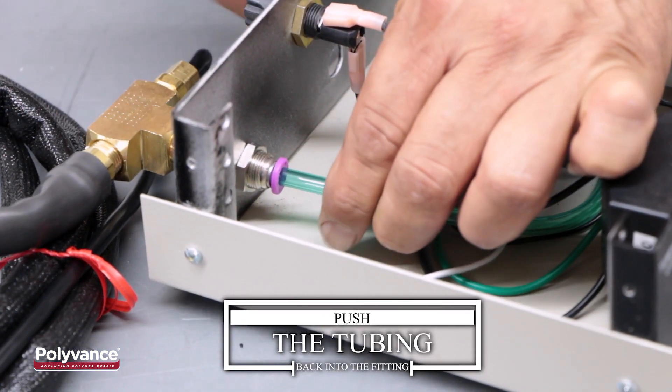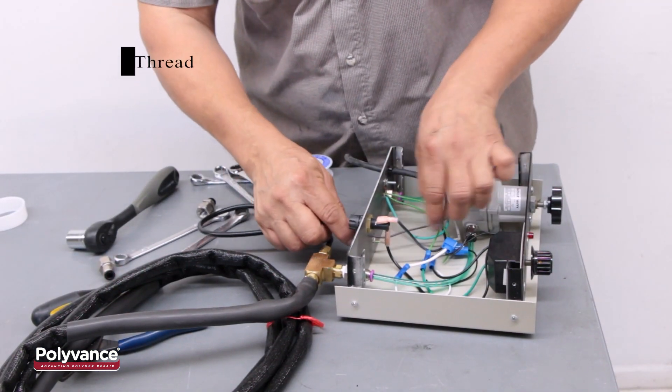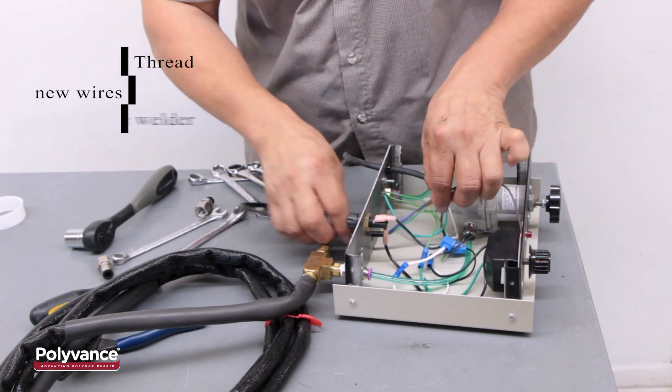Push the tubing back into the quick disconnect fitting. Take the power lead wires from the new hose and thread them back through the welder.